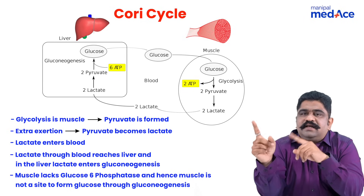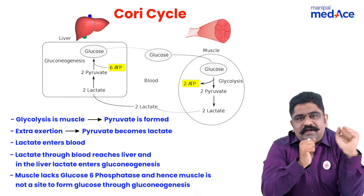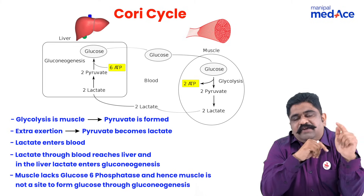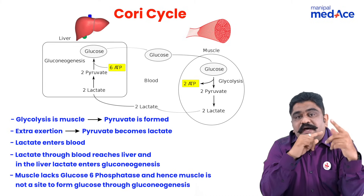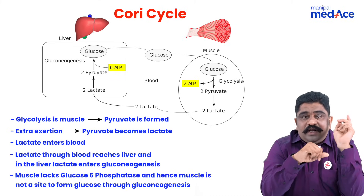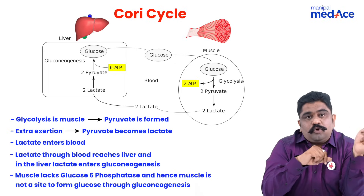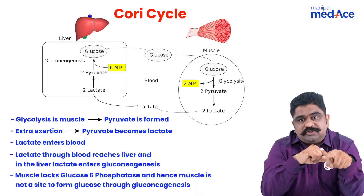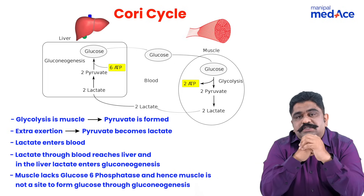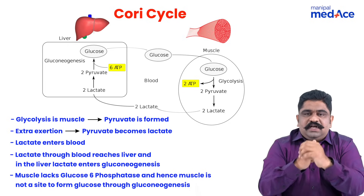So, the lactate is released into the blood. Through the blood, the lactate goes into the liver. In the liver, lactate will become pyruvate, and pyruvate will go for gluconeogenesis to become glucose. There is regeneration of glucose — that glucose will again come back into circulation and go to the muscles, where the muscles will use the glucose again for glycolysis.